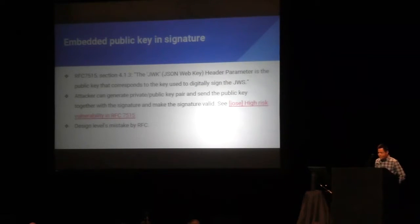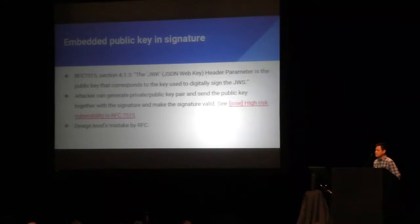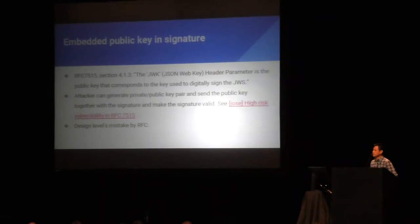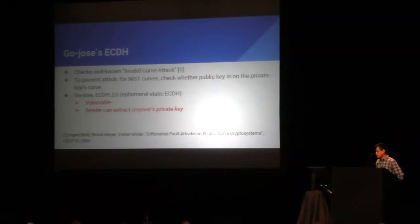When I started, I had no idea what JSON Web Token was, so I just read the RFC. One line really triggered me — it says that in the signature, you embed the public key corresponding to the signature. Basically, what it means is that an attacker can generate a private-public key pair and then send the public key together with a signature, with the hope that the receiver will extract the public key and use it for signature verification. This is a design-level mistake by the RFC, and let's see how it leads to unsafe implementation.